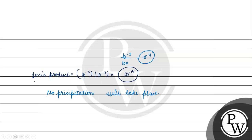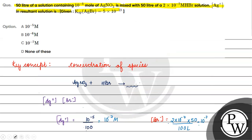Since no precipitation takes place, the Ag⁺ concentration remains the same. It is 10 raised to the power minus 5 moles by 100 liters, meaning 10 raised to the power minus 7 molar. The correct answer for this question is option C. I hope you understood it well, thank you, all the best.